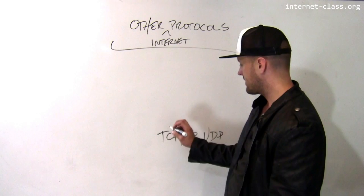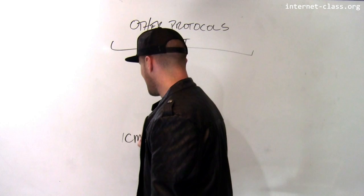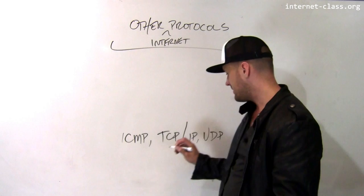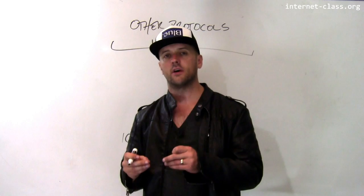These are considered part of the core internet protocol suite. There's another part of this suite called ICMP — the Internet Control Message Protocol. ICMP is not used for transmitting data around like these other protocols. What ICMP is used for is to send control messages between routers and other computers on the internet.